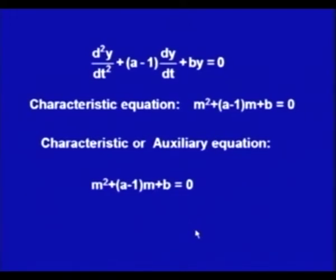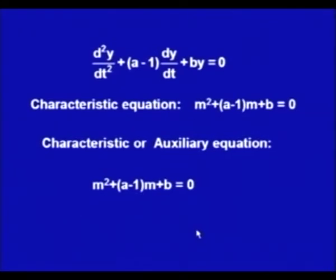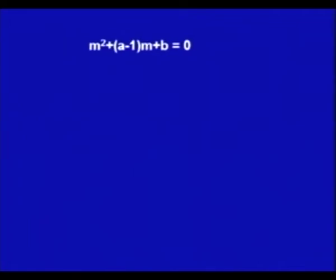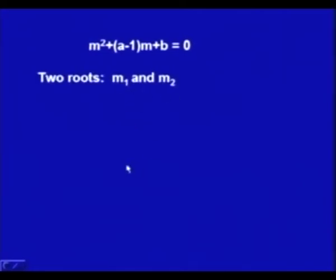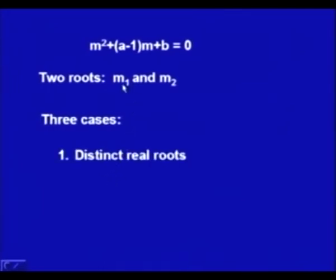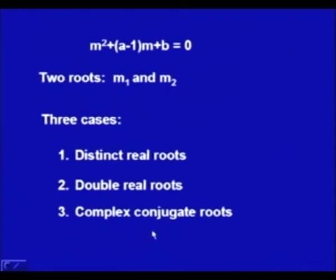The auxiliary equation m² + (a−1)m + b = 0 is quadratic, so it has two roots, and the solution depends on those roots. There are three cases: Case 1 — two distinct real roots m₁ and m₂; Case 2 — two equal real roots (double root); Case 3 — complex conjugate roots m₁, m₂.